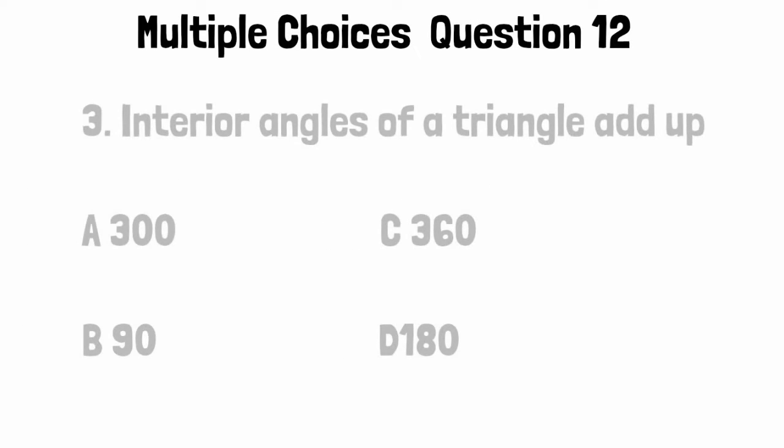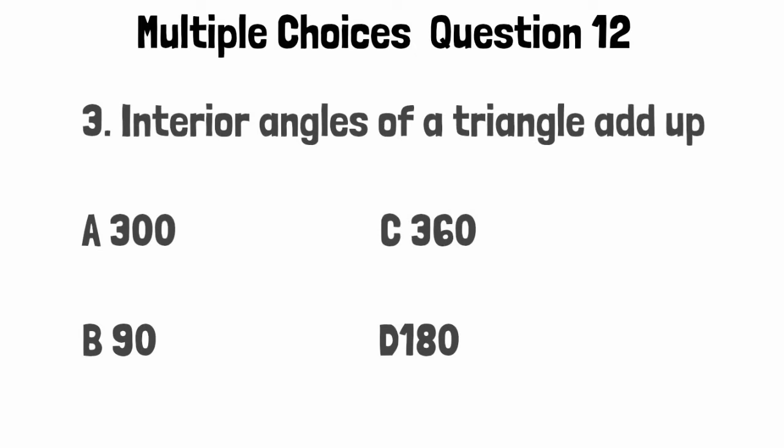Question 3. Interior angles of a triangle add up to: Option A: 300 degrees, Option B: 90 degrees, Option C: 360 degrees, Option D: 180 degrees.